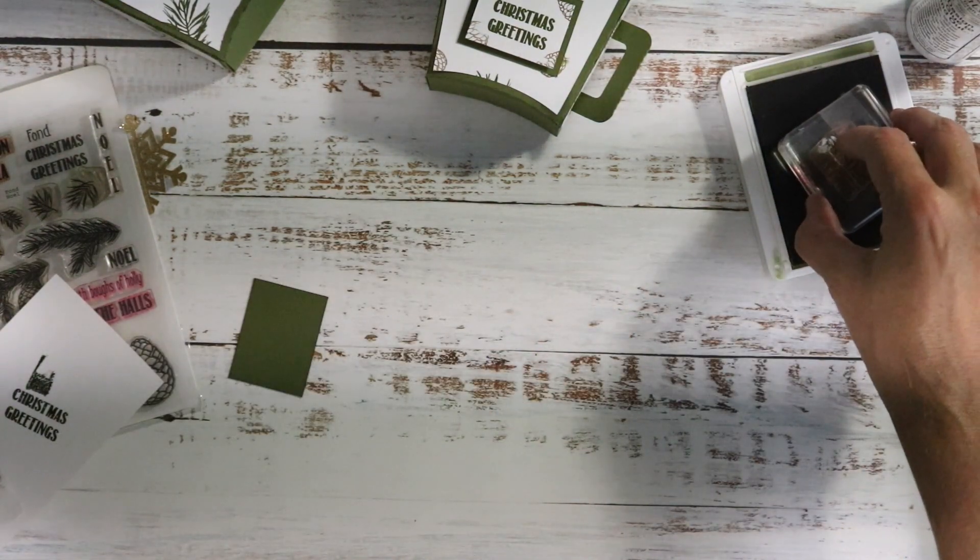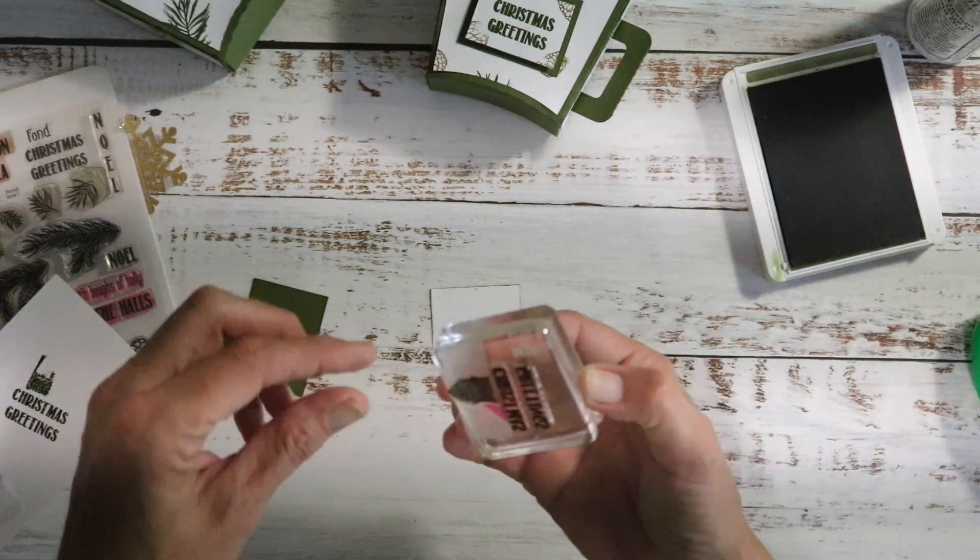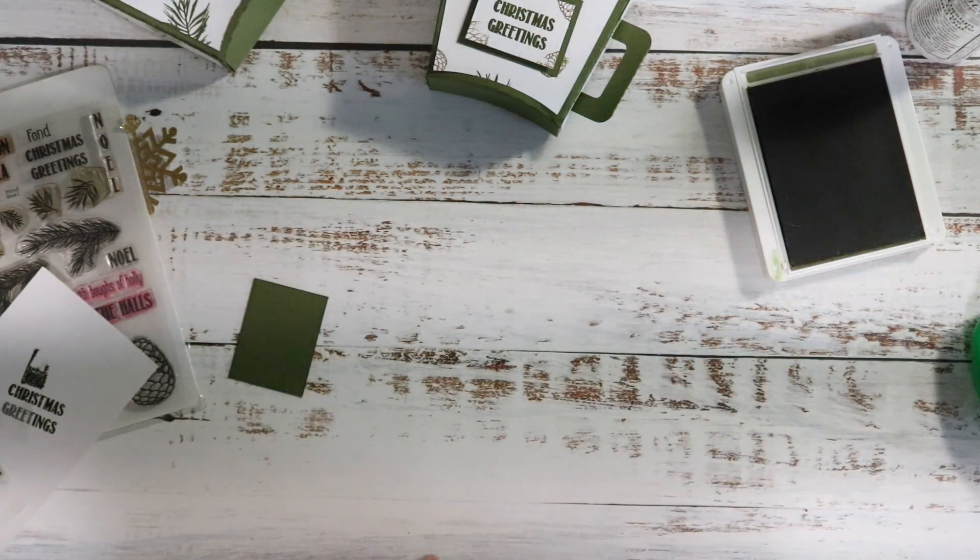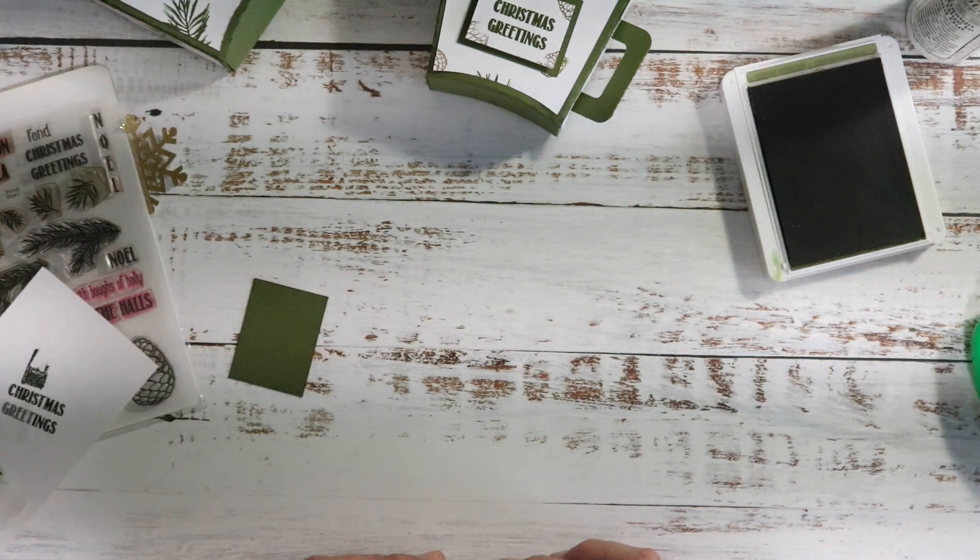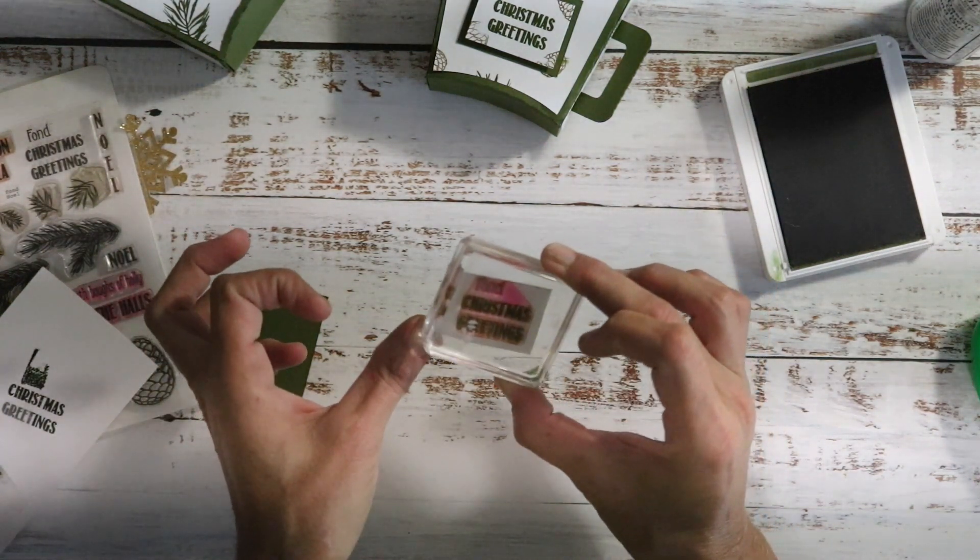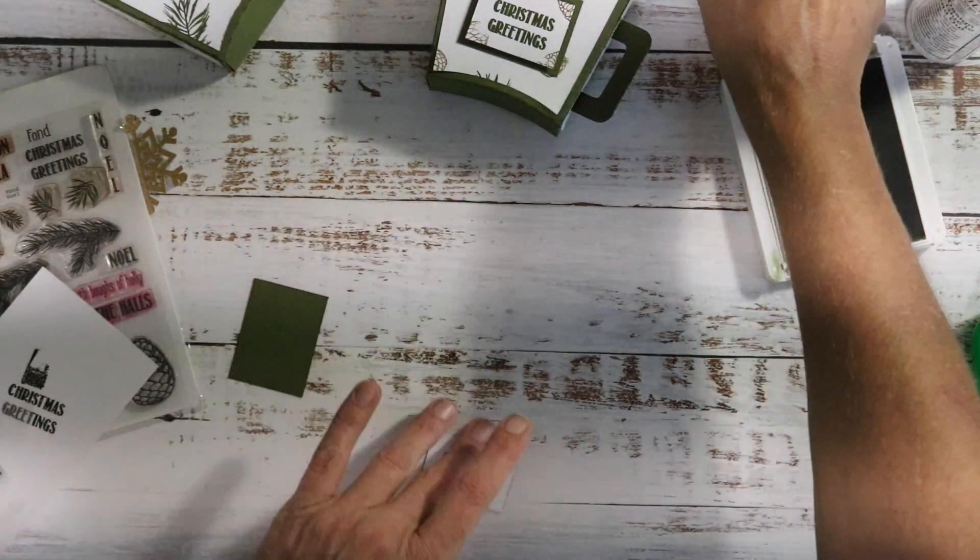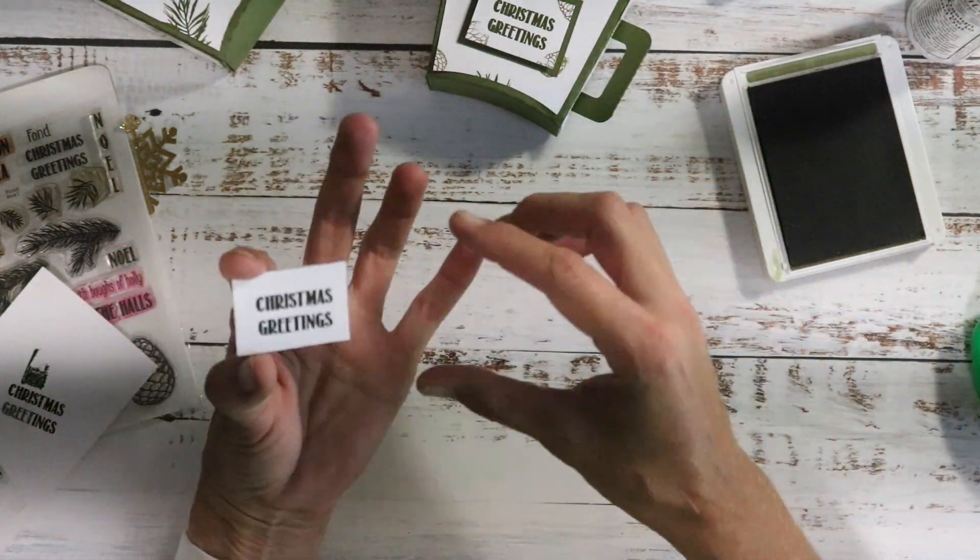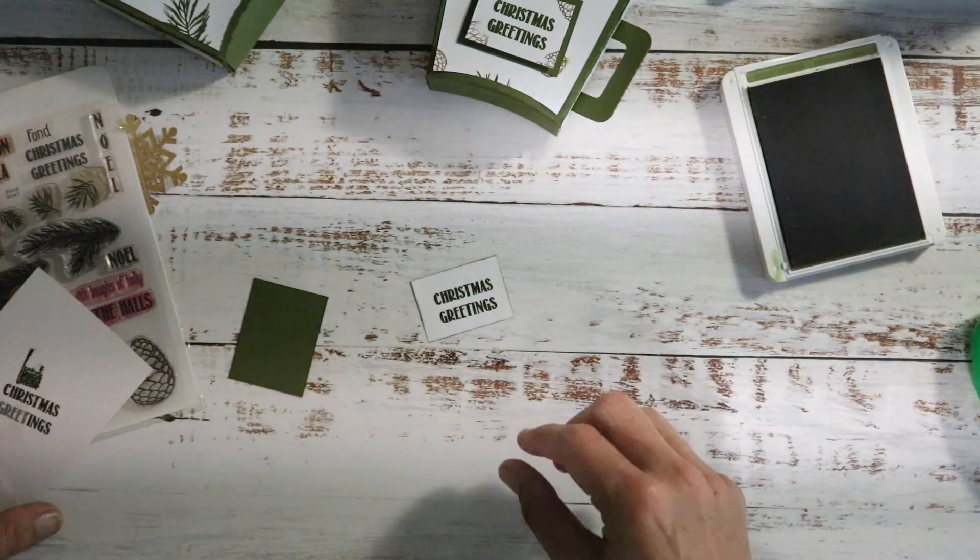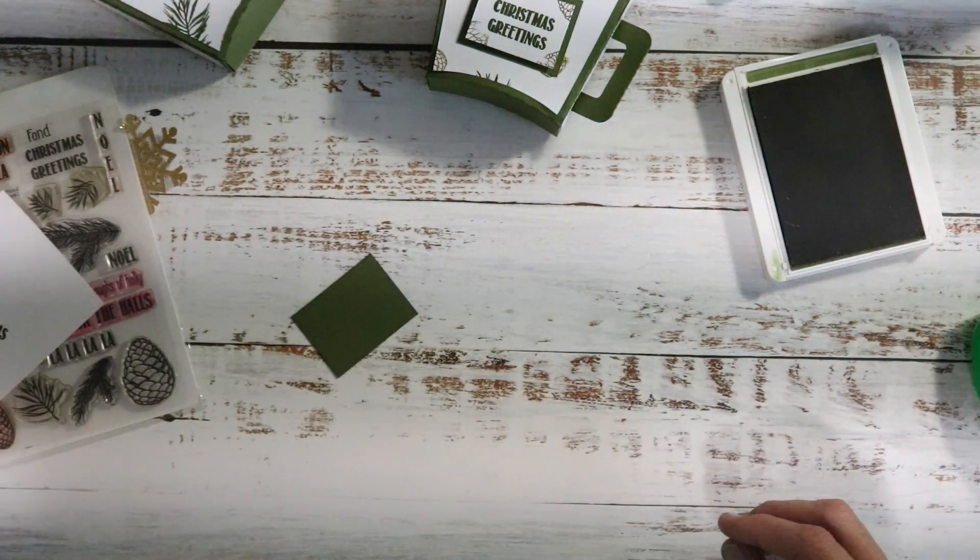So again we're going to cover up the word fond, ink it really good. Take the tape off and then I'm going to bring it closer to me so I can be above it or on top of it. I hope that will give us a better image. It's the same on both sides. Actually okay this side is nicer. So I'm going to use that side.